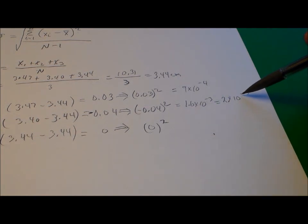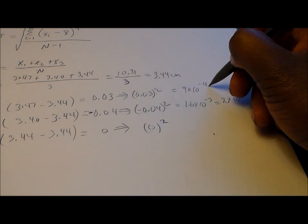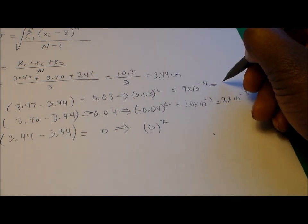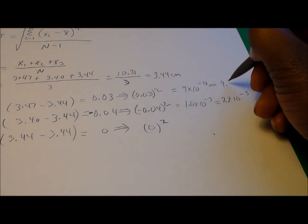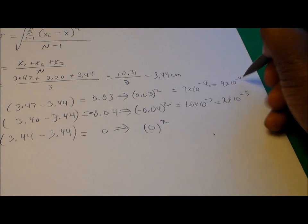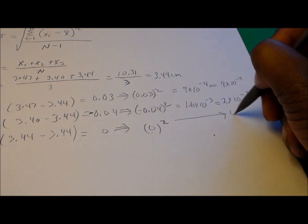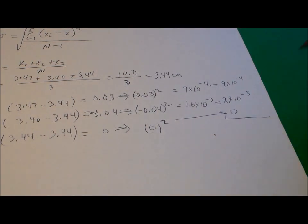So that's 2 times 10 raised to the minus three, and 9 times 10 to the minus four, and of course zero.